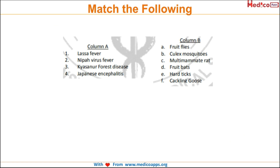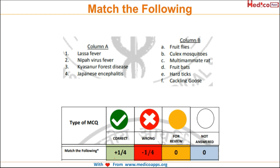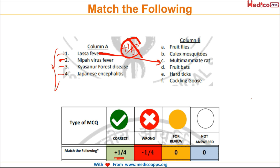Then there is the match the following question. Column A and column B may have different numbers of choices — for example, column B might have 6 options. There are 4 items to match, so each correct match gives plus 1/4 and each wrong match gives minus 1/4. So again this is a 100% negative marks type of question.